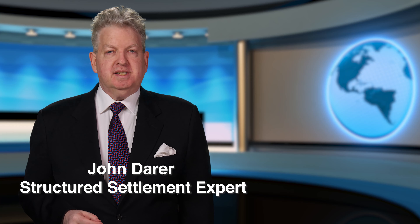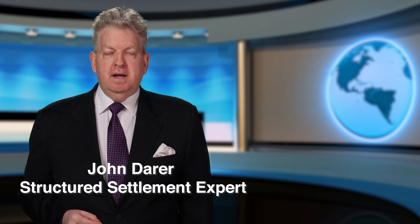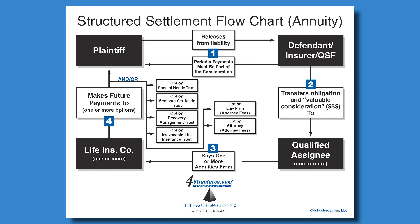A structured settlement transaction is actually relatively simple. This particular flowchart shows the four basic steps of any domestic, qualified structured settlement funded with annuity. Number one, there has to be a promise to make future periodic payments in exchange for a release. Number two, there's an assignment of that obligation to make those payments to an assignment company, either a qualified assignment company or a non-qualified assignment company, depending upon the type of damages.